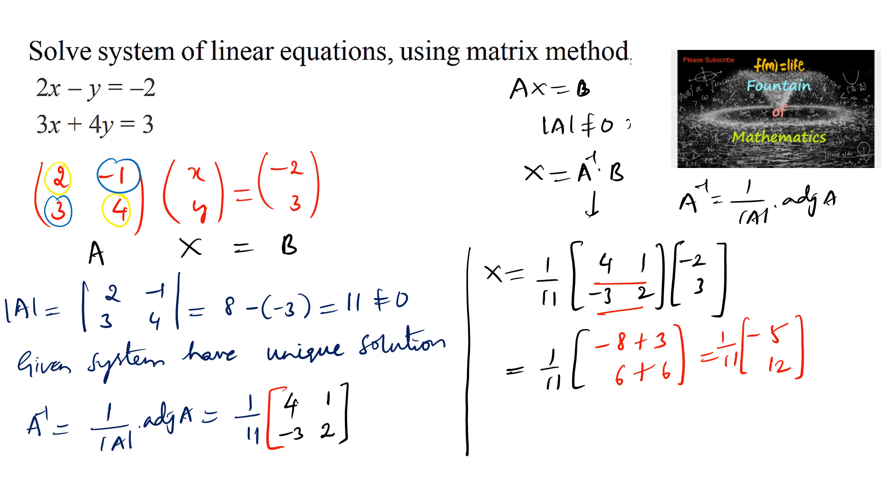So we can write 1 upon 11, or we can write the variable matrix as x and y is equal to minus 5 by 11 and 12 by 11. So on comparing both, we can say x is equal to minus 5 by 11 and y is equal to 12 by 11 is the solution. Thank you.